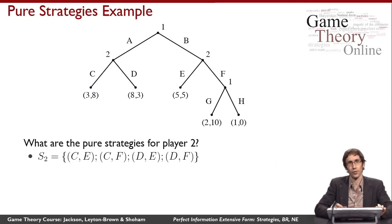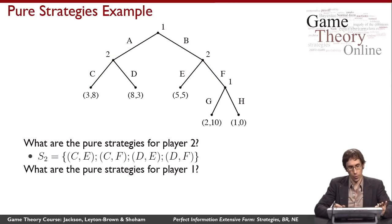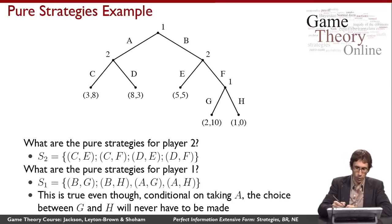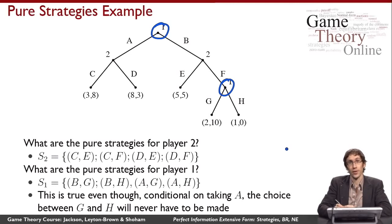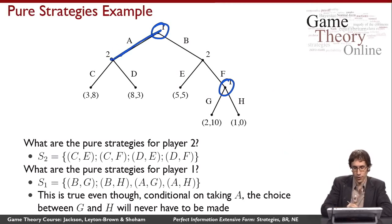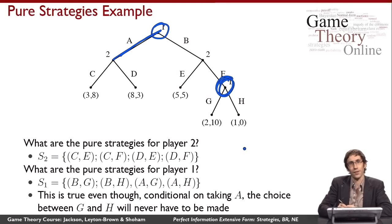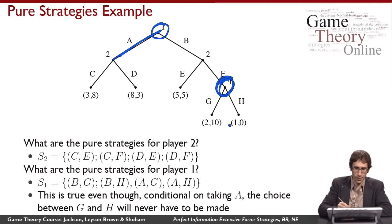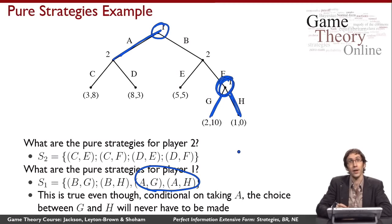For player one, things are a little more interesting. Player one also has two choice nodes, so there are four pure strategies for player one as well. Why is this interesting? If player one takes a particular first action, he will never reach his second choice node. Nevertheless, our definition says that the pure strategy AG is different from the pure strategy AH, so there are still four pure strategies for player one rather than three.